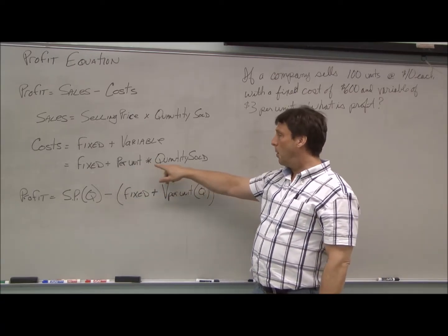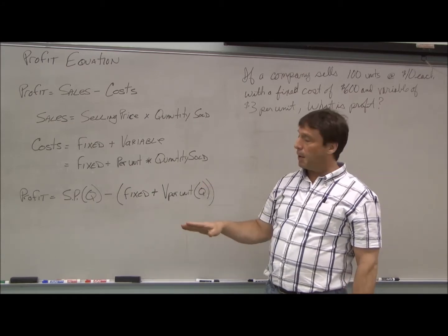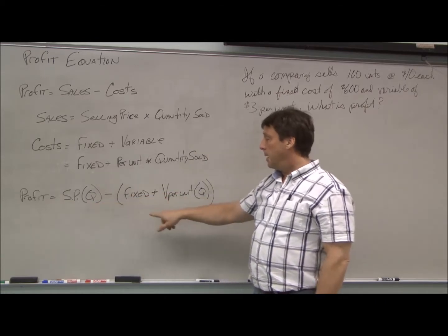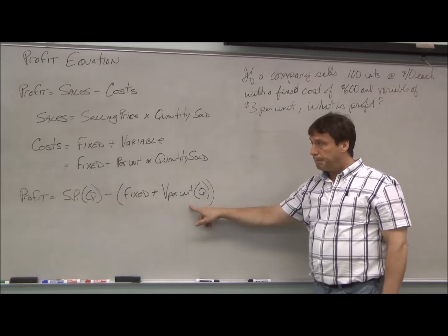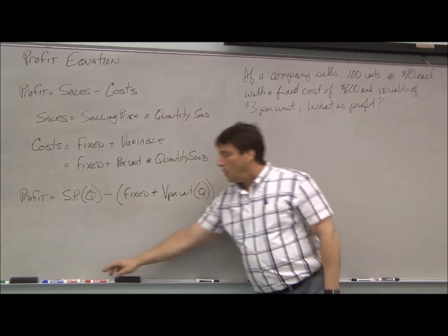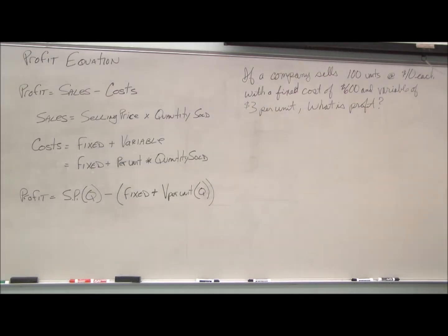That's a per unit charge times the quantity sold. We can rewrite the profit equation as selling price times quantity minus the sum of our fixed costs and variable costs. To illustrate with an example: a company sells 100 units at $10 each with a fixed cost of $600 and a variable cost of $3 per unit. What is the profit?